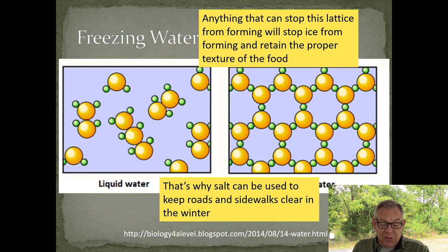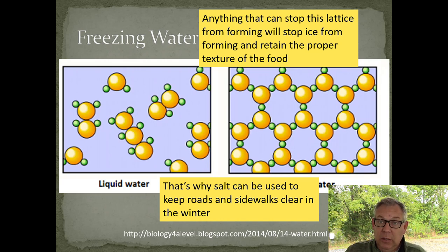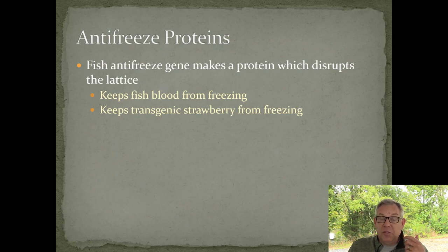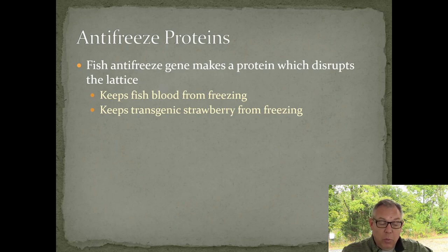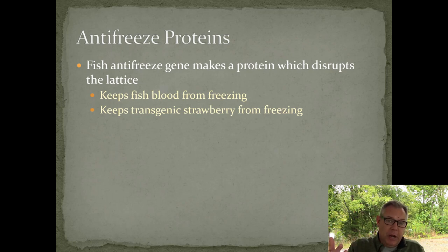Anything that can stop that ice lattice from forming will stop the ice from expanding and will retain the proper texture of the food. If you put those antifreeze proteins in strawberries, the ice doesn't form and the strawberries aren't mushy - the same reason you can use salt to clear roads and sidewalks. The salt keeps the lattice from forming. The fish antifreeze gene makes a protein which disrupts the lattice, keeping the Arctic fish's blood from freezing and also keeping the transgenic strawberry from freezing.